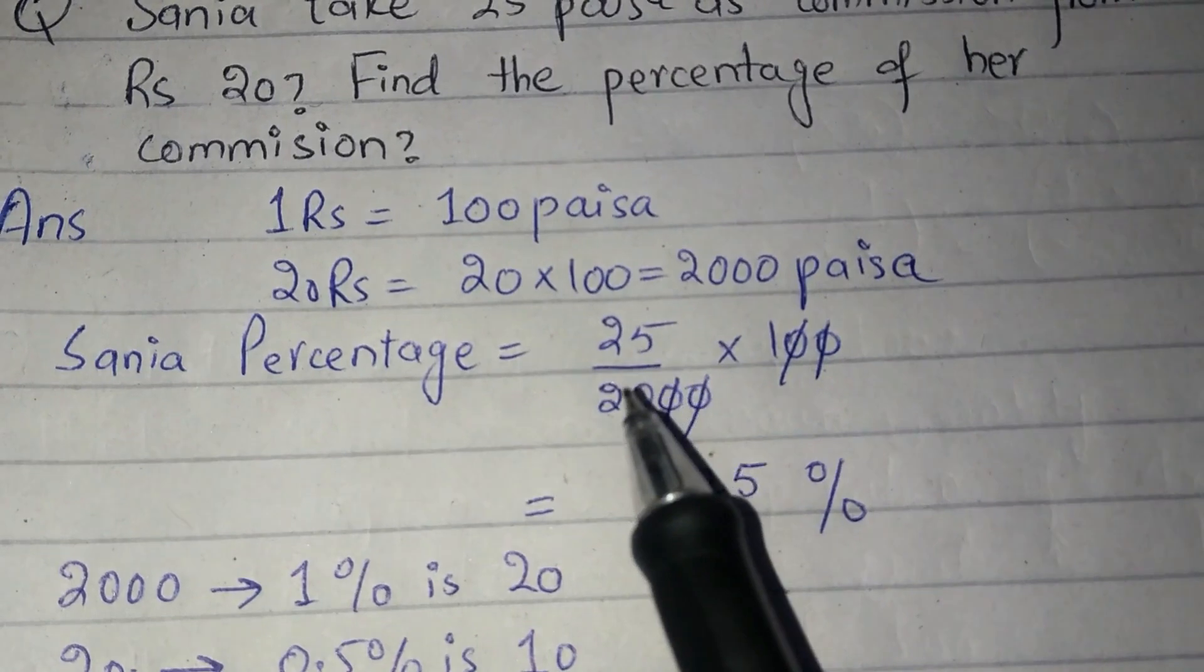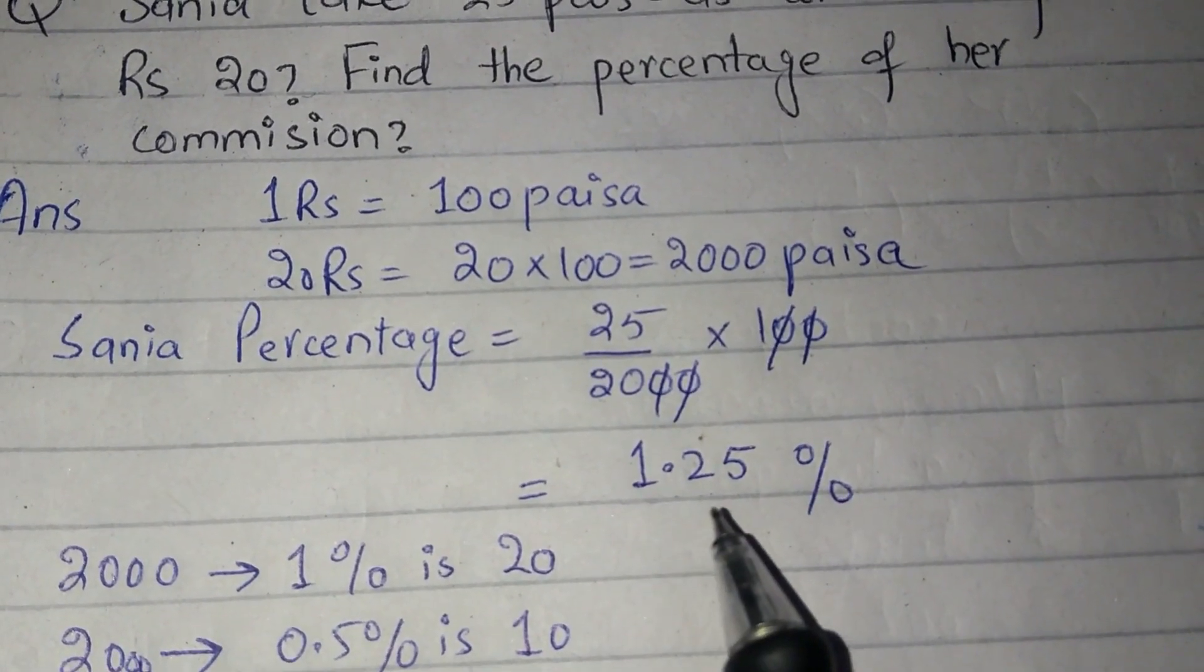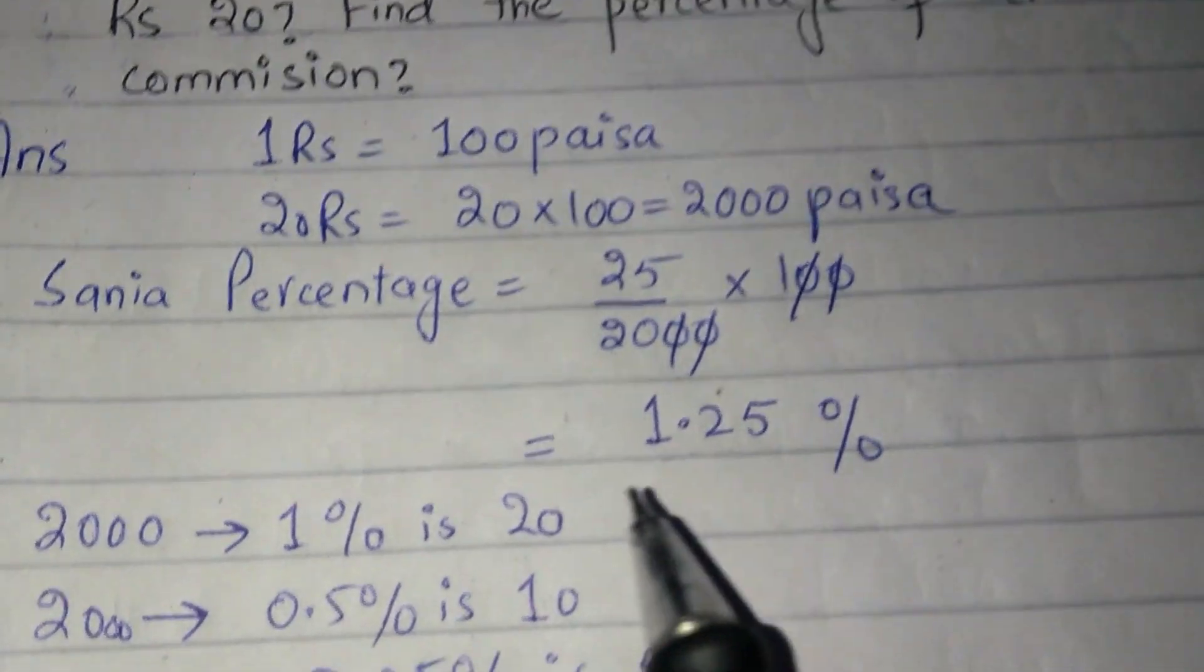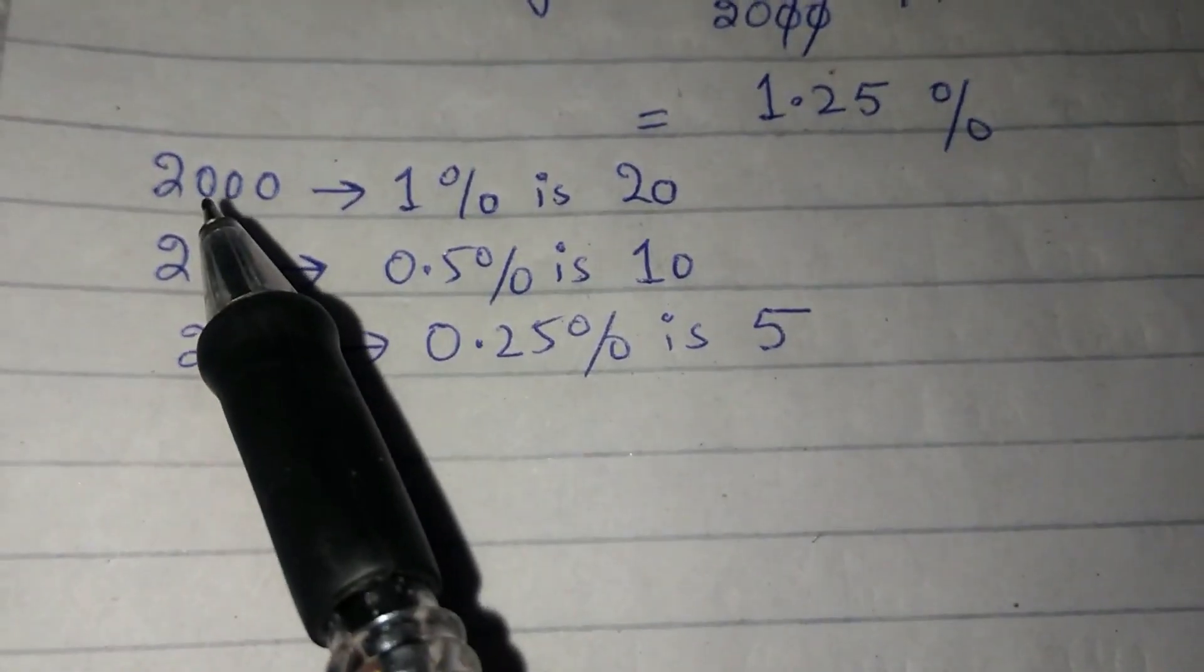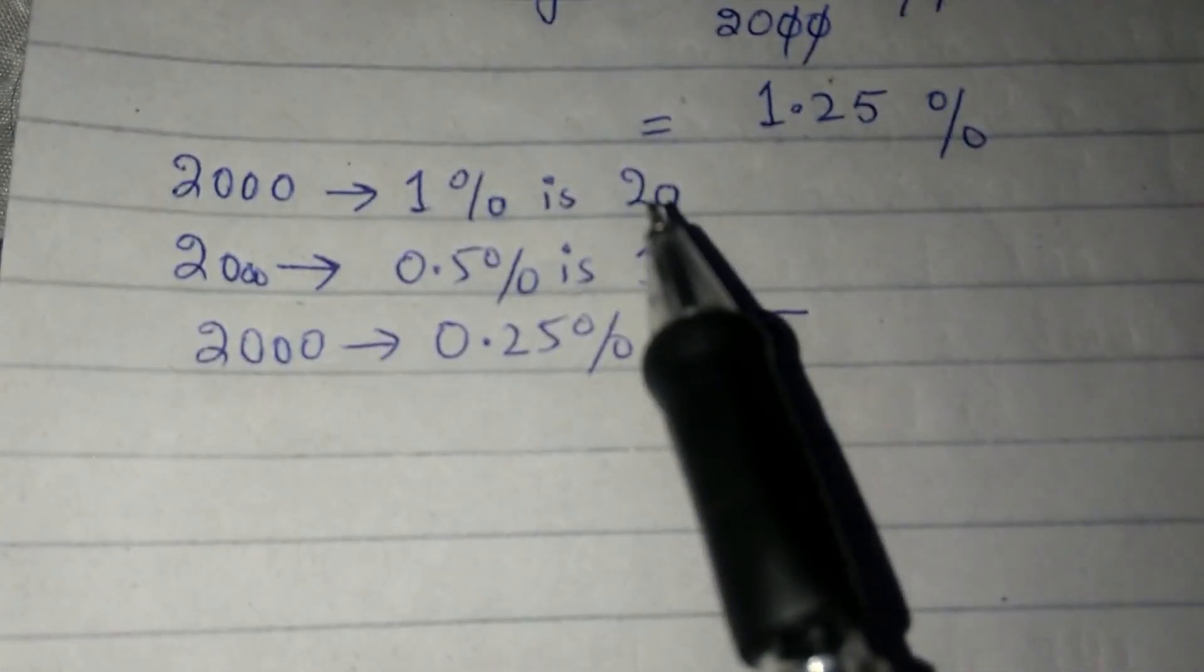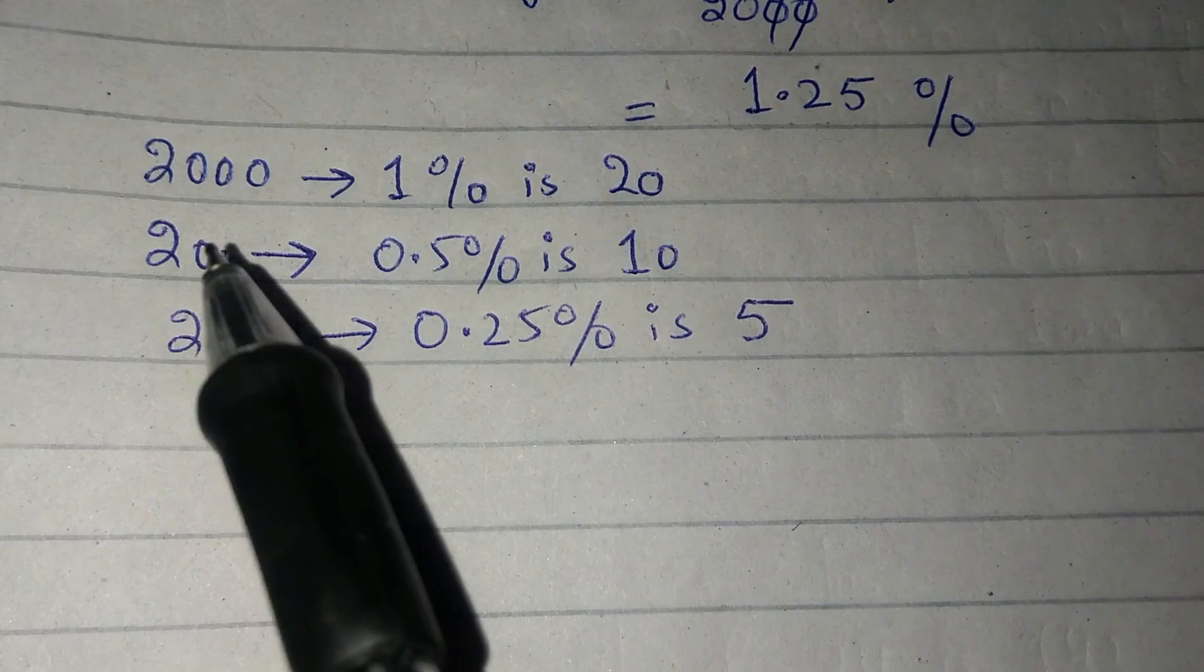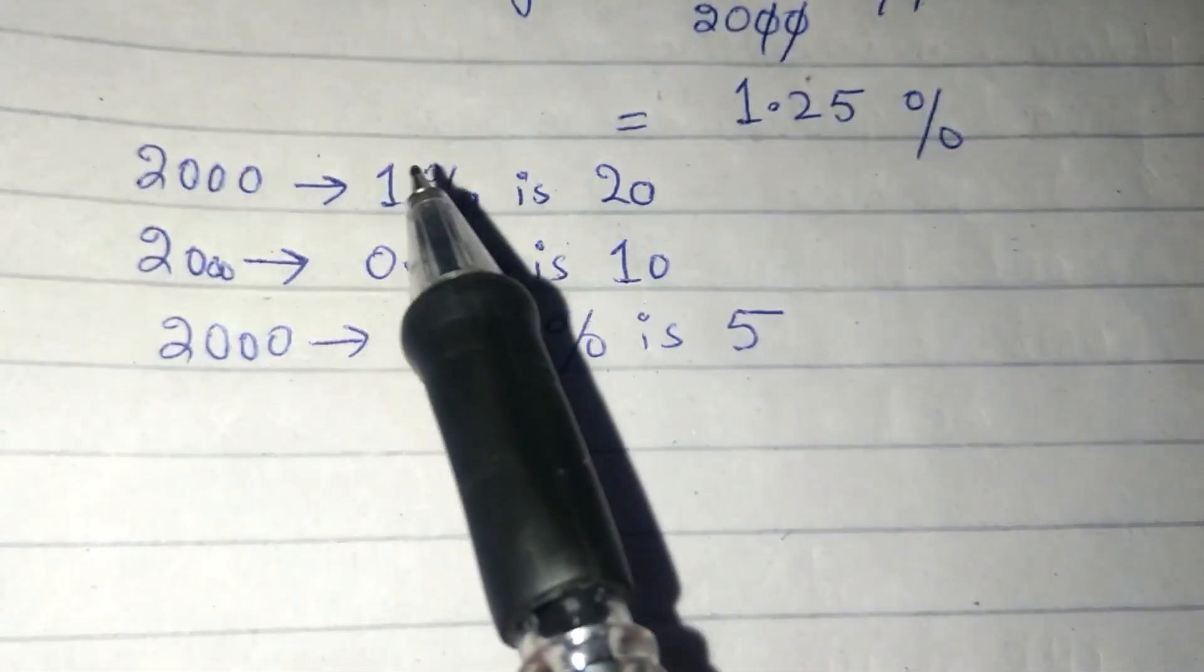Sania's percentage will be 25 divided by 2000 into 100, which is 1.25 percent. Now there's also a shortcut way. 2000 ka 1 percent is 20, 2000 ka 0.5 percent is 10.